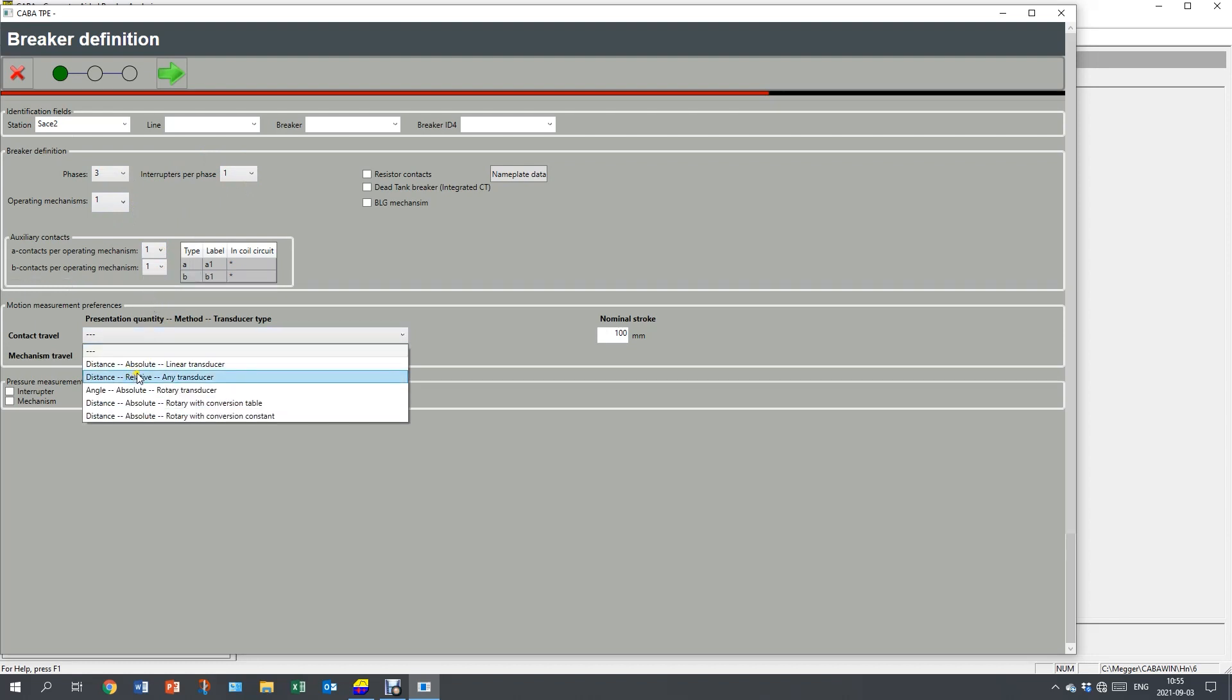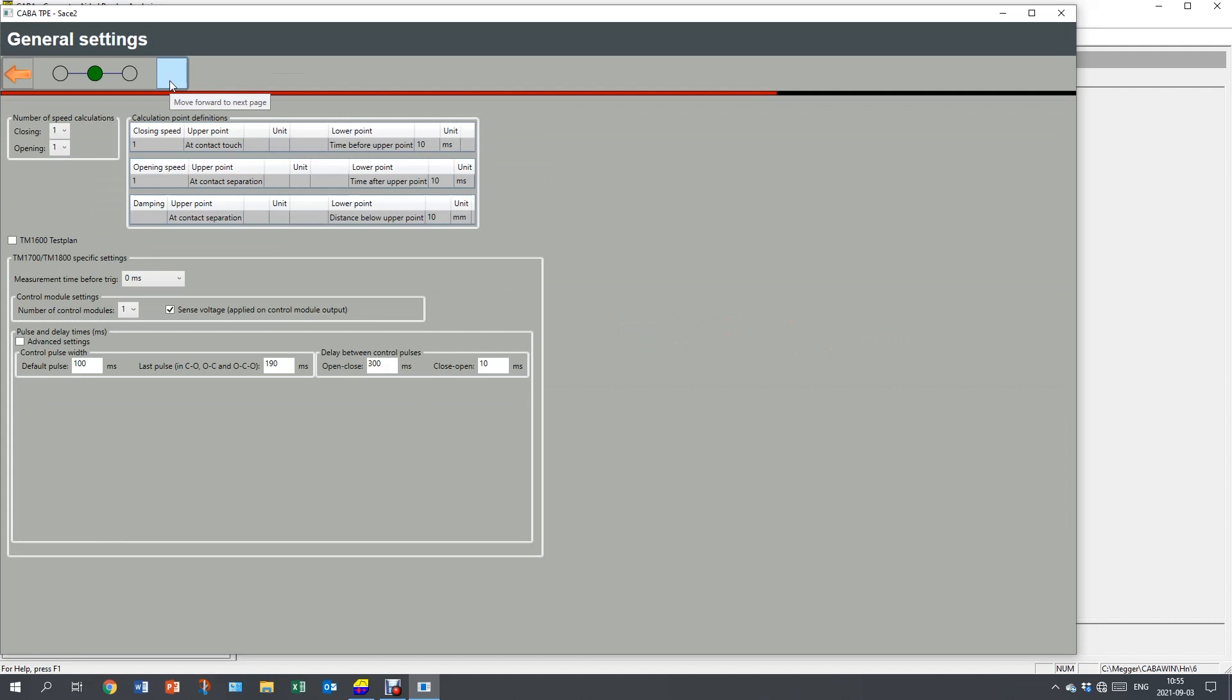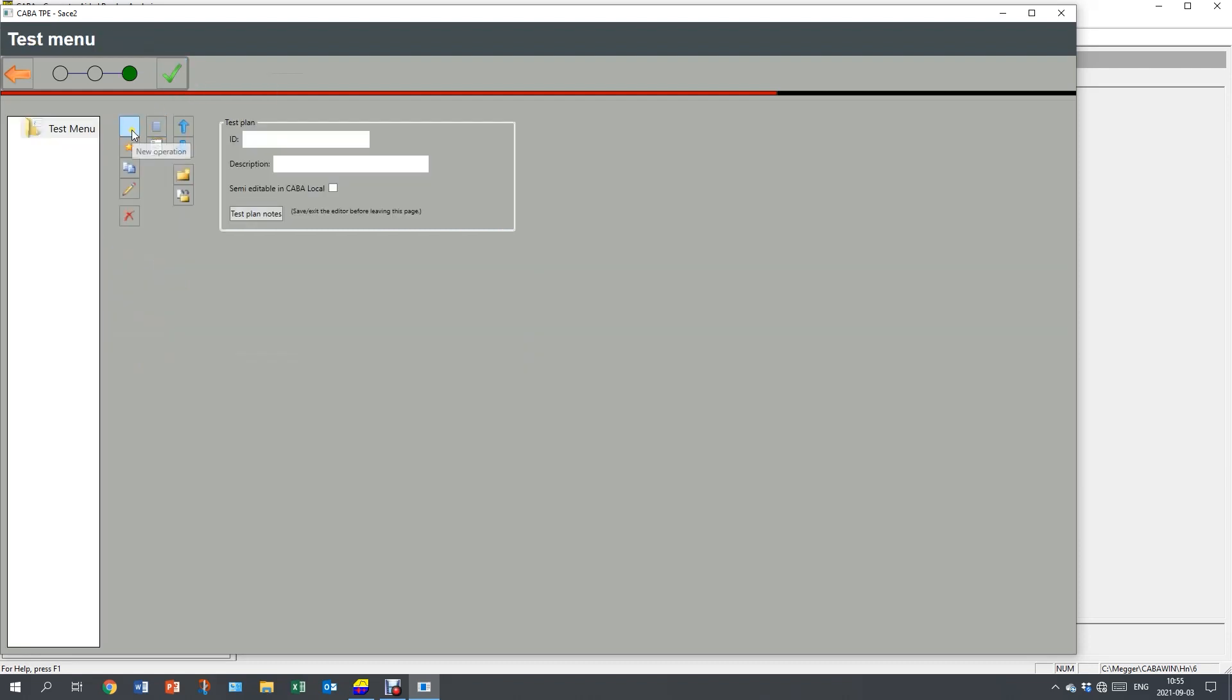I'm going to use relative and I'm going to use 100 as nominal stroke. And it's one common motion. I want to have a pre-trigger measurement time. So I set this one to 100. And I continue and create my menu.